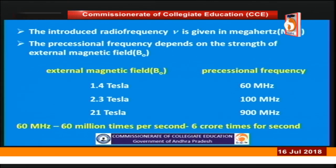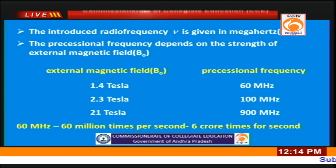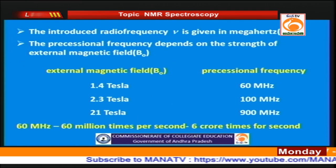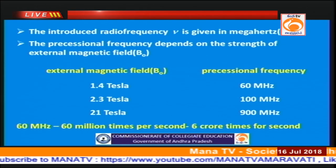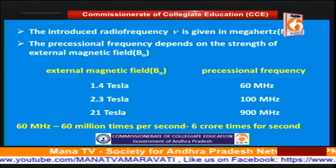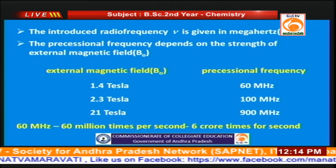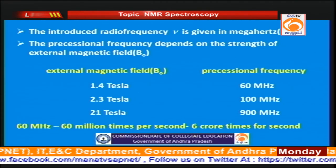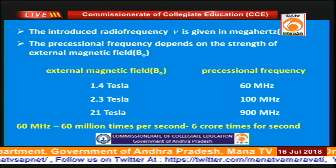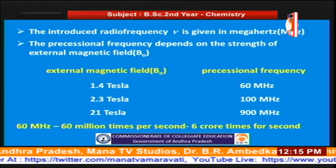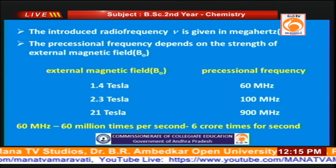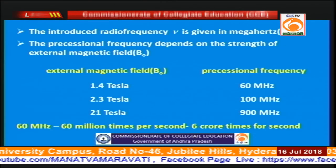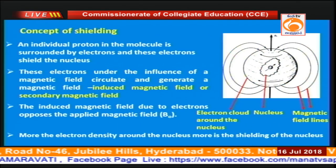The precessional frequency — the frequency with which the proton undergoes precessional motion in the presence of an external magnetic field — is determined by the magnetic field strength in Tesla. As the field strength B₀ increases, the precessional frequency also increases. For example, 60 MHz equals 60 million times per second. The proton in the presence of a 1.4 Tesla external magnetic field undergoes precessional motion 6 crore times per second.